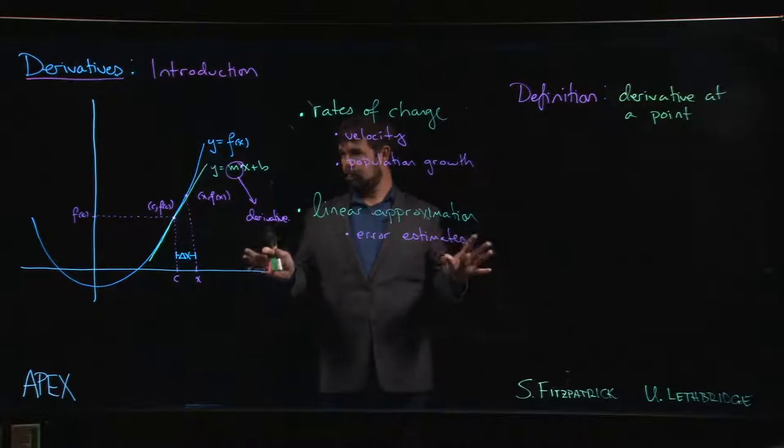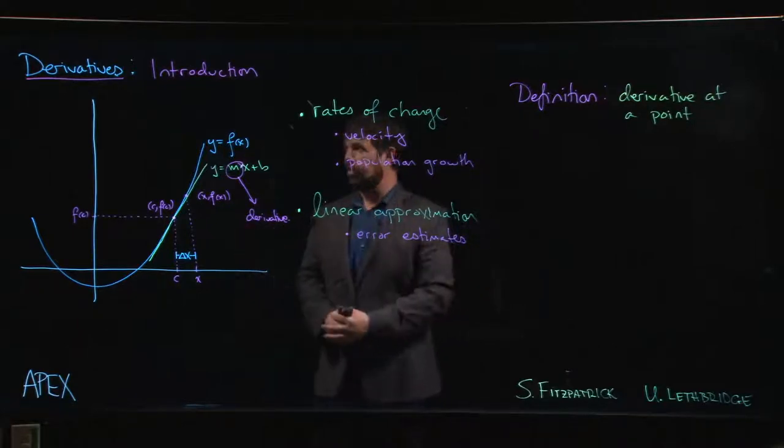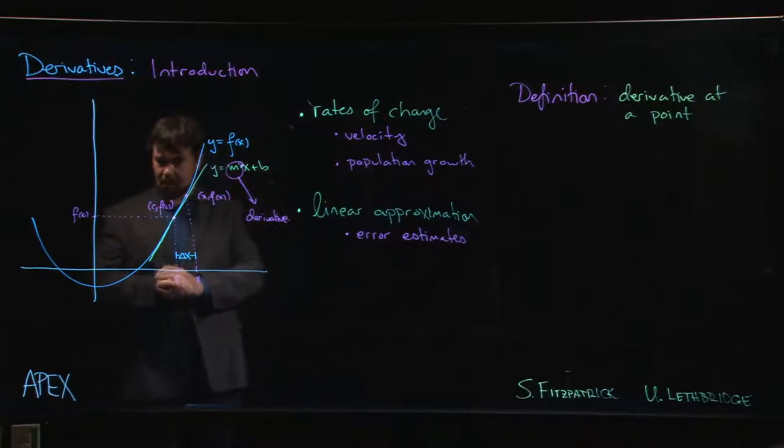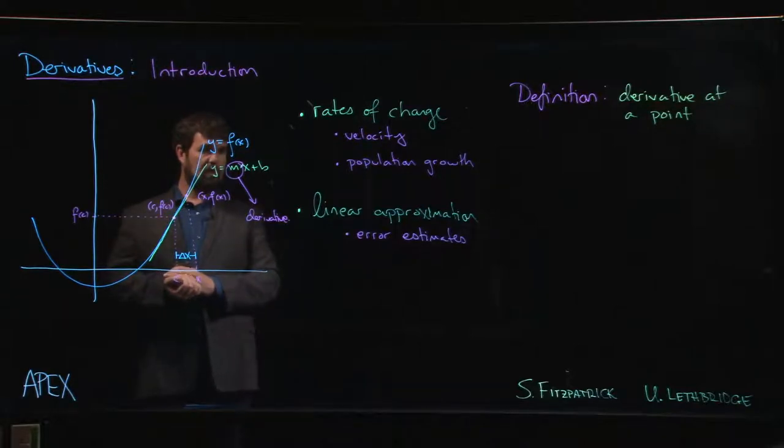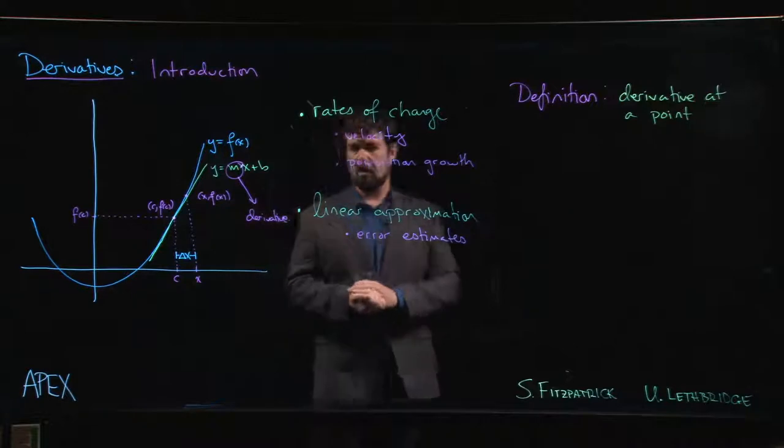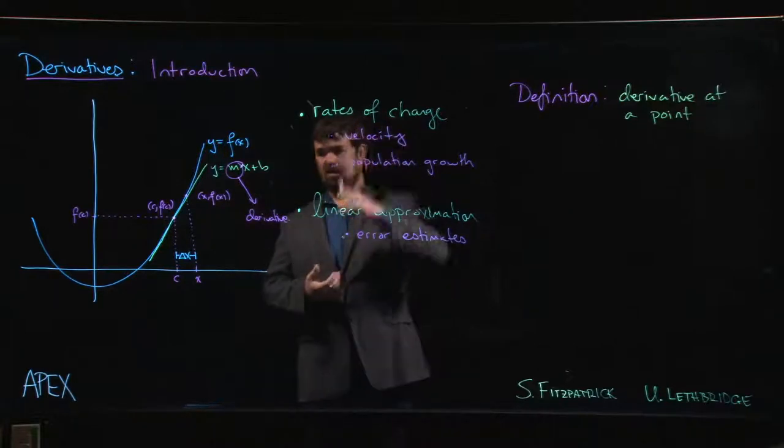Okay, so in the last video we tried to give a rough introduction, sort of general motivation to this idea of a derivative without really saying anything particularly precise. The derivative has something to do with slopes of tangent lines, and this can somehow be tied into things like rates of change, like velocity.